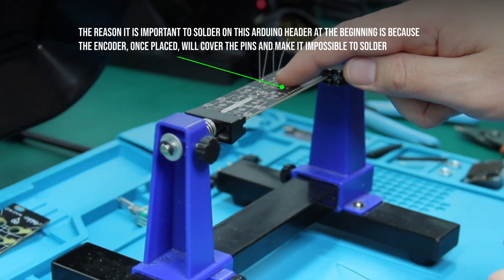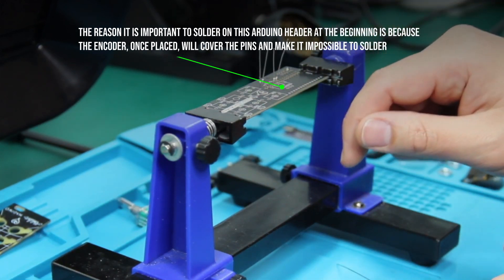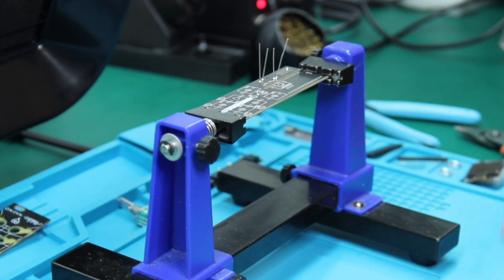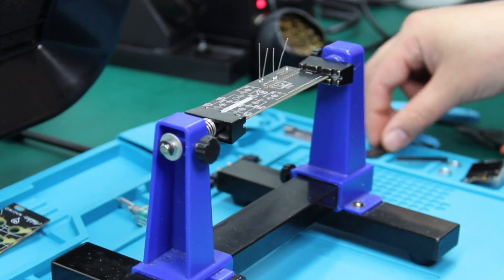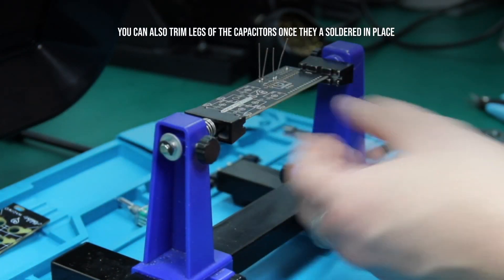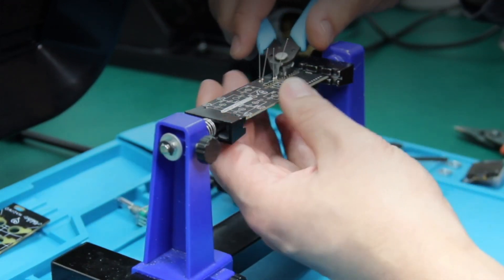The reason it is important to solder on this Arduino Nano header at the beginning is because the encoder, once placed, will cover the pins and make it impossible to solder on the header afterwards. You may also trim the legs of the capacitors once they have been soldered in place.